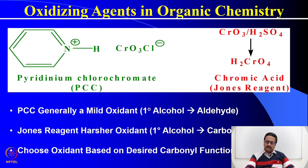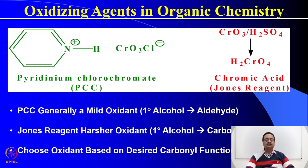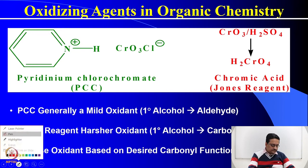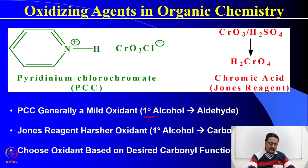Some of you may have studied in your class 10 different oxidizing agents in organic chemistry, and those are chromic acid, pyridinium chlorochromate — abbreviated as PCC — or potassium permanganate, which are routinely used in organic synthesis for oxidizing various compounds. PCC is generally considered a mild oxidizing agent and it oxidizes primary alcohol to aldehyde.